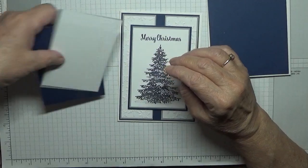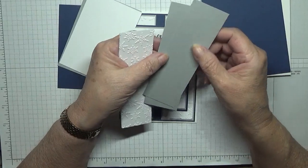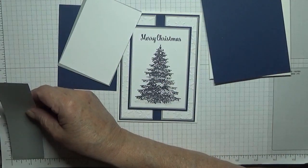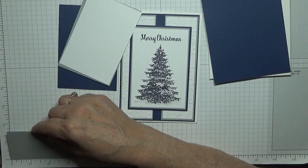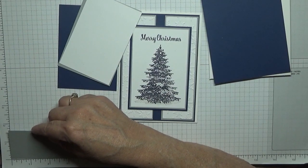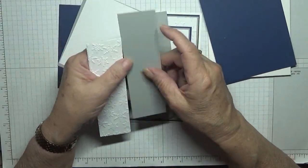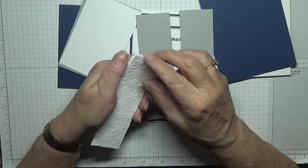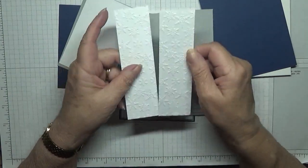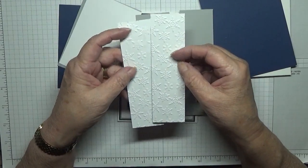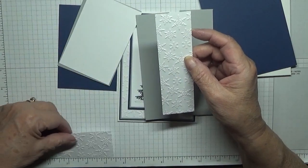I also have two pieces of smoky slate. They measure one and three quarters by five and a half. I have two pieces of whisper white, it's not whisper white, it's just white card stock at one and three eighths by five and three eighths, and they will sit on top of there.